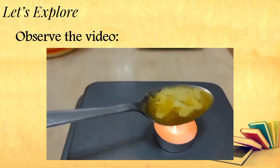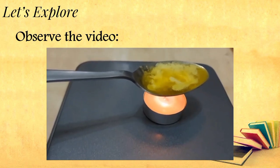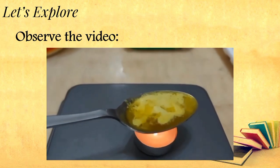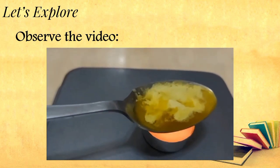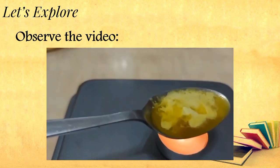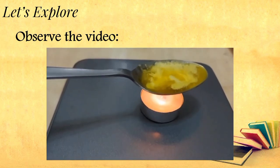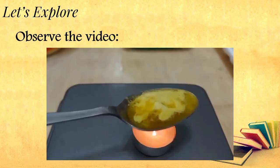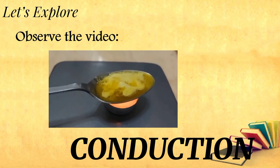As you can see in the video, the margarine melted. The heat from the flame travels through the metal spoon until it reaches the other end of the spoon, which causes the margarine to melt. The pair of metal tongs will also be heated. Heat moves from a hot object to a cold object. As the metal spoon is heated, the margarine on the other end melts. This shows that heat from the flame is transferred from one end of the metal spoon to the other end. This is called transfer of heat by conduction.